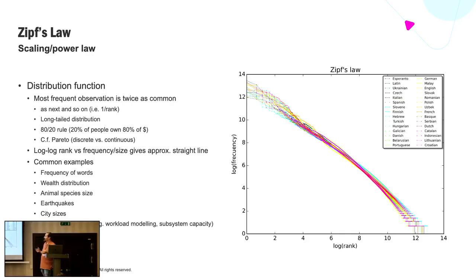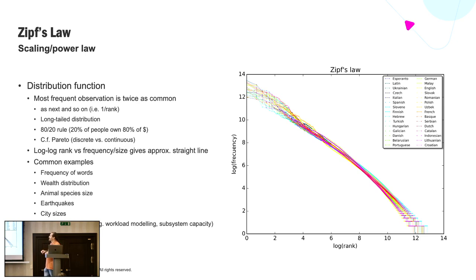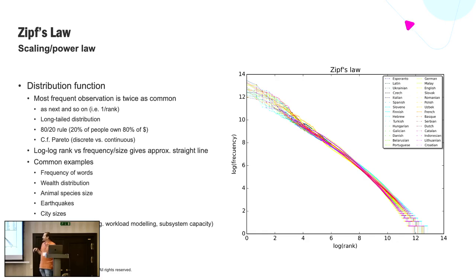If you graph the log of rank versus frequency and size, that's approximately a straight line — though there's a lot of variation with distributions that are close to Zipfian but not exactly the same. Common examples include the frequency of words in a language, wealth distribution, animal species size, earthquake sizes, and city sizes — a well-known example. Computer systems in general have a lot of Zipf-type distributions: workload modeling, subsystem capacity, and many other things. And galaxy sizes as well.